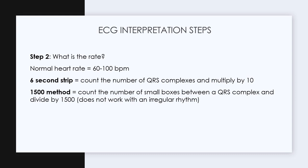Step two: what is the rate? A normal heart rate is between 60 and 100 beats per minute. To determine the rate, get a six-second strip and count the number of QRS complexes, then multiply by 10. Or use the 1500 method — count the number of small boxes between a QRS complex and divide into 1500. Note that this does not work with an irregular rhythm, but for most regular rhythms we can get an accurate heart rate.